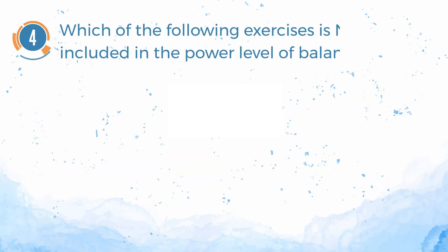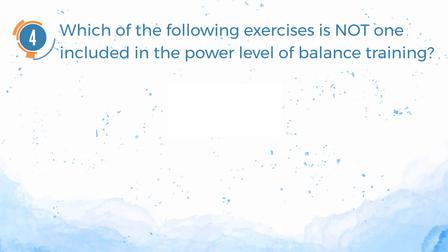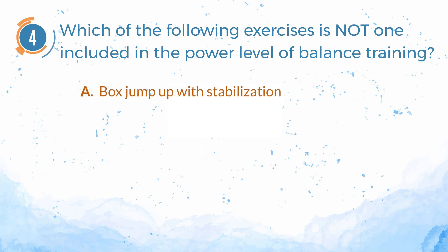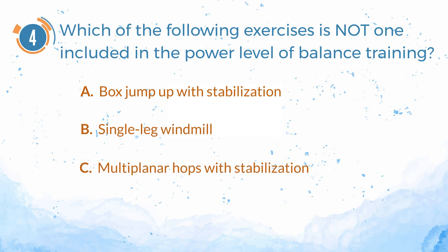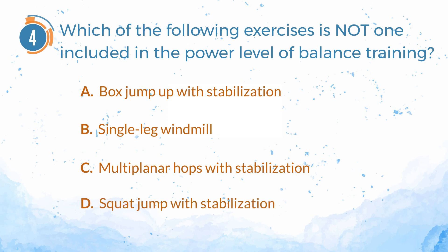Number 4. Which of the following exercises is not one included in the power level of balance training? A. Box jump up with stabilization. B. Single leg windmill. C. Multiplanar hops with stabilization. D. Squat jump with stabilization.